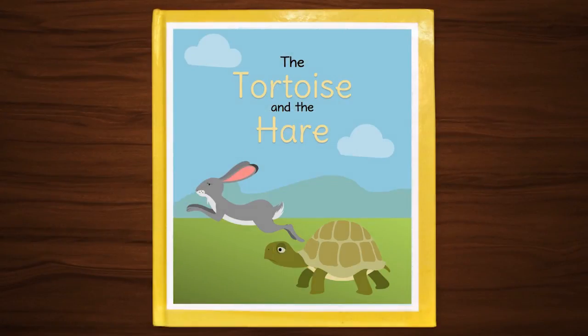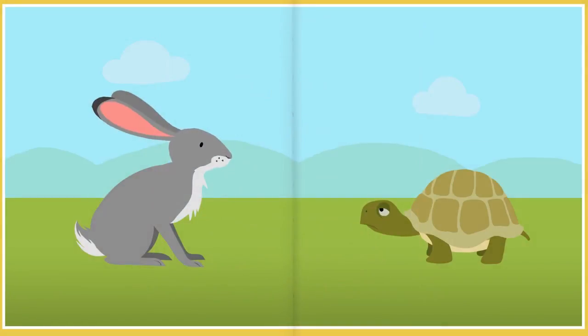As an example, we will use the story The Tortoise and the Hare. The hare bragged that he was the fastest animal around. The tortoise challenged him to a race. The hare laughed, but he accepted.